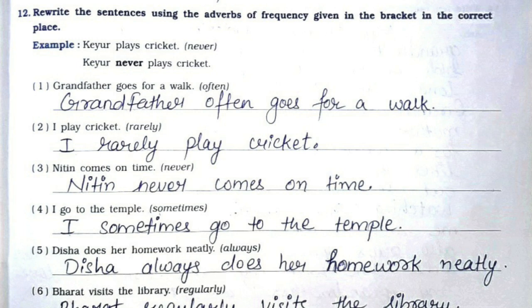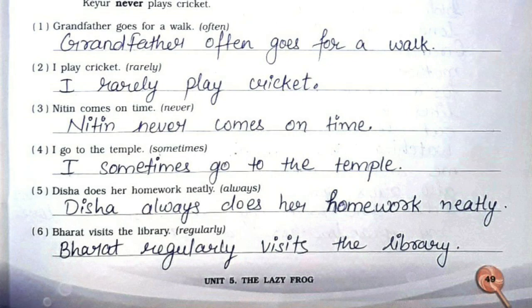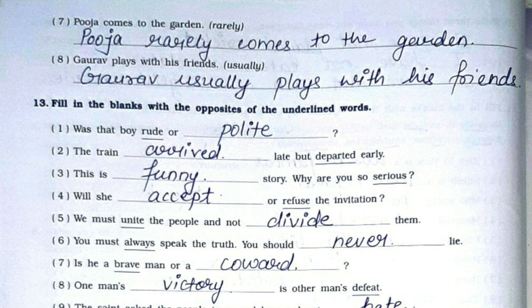Question twelve: Rewrite the sentences using the adverbs of frequency in the correct place. First: Grandfather often goes for a walk. Second: I rarely play cricket. Third: Nitin never comes on time. Fourth: I sometimes go to the temple. Fifth: Disha always does her homework neatly. Sixth: Bharat regularly visits the library. Seventh: Puja rarely comes to the garden. Eighth: Gaurav usually plays with his friends.